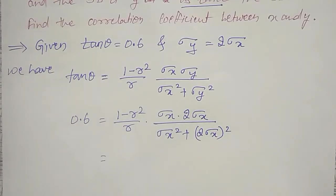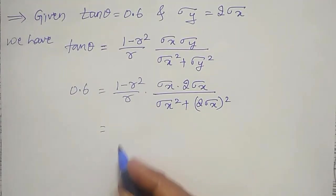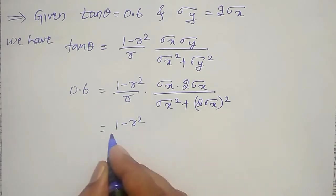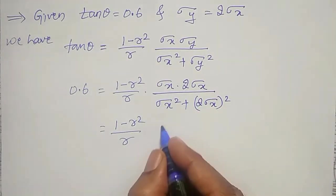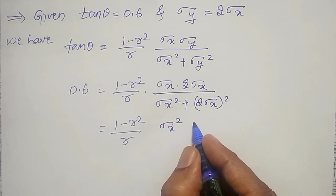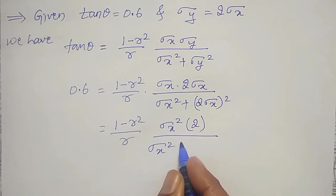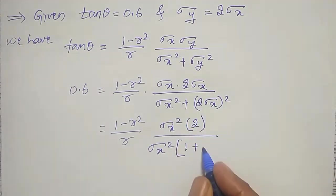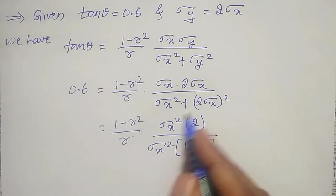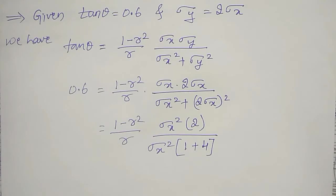From these things I will take sigma x square common. (1 minus r square) divided by r, and here sigma x square is common from the numerator, and it is times 2, whole divided by sigma x square times (1 plus 4).